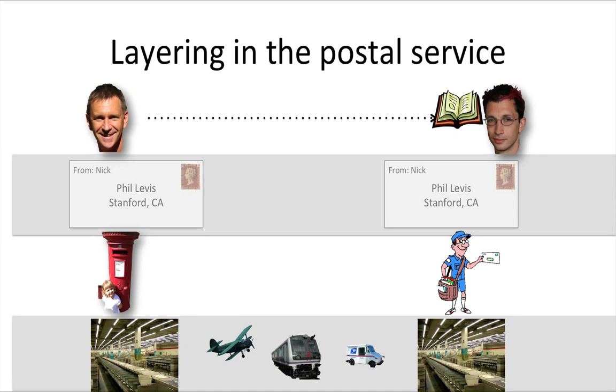I don't mind whether Olive walks, skips, bicycles or runs to the mailbox. I don't care which mailbox she posts the letter in. I want the lower layers to abstract away the details for me, providing me with a simple service model. I put the book in an envelope, and the layers below deliver it to Phil.